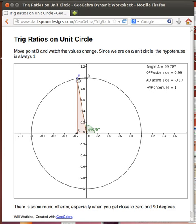Now notice something interesting. Right here the tangent is undefined because the adjacent side is 0. We'd be dividing by 0. That's undefined.